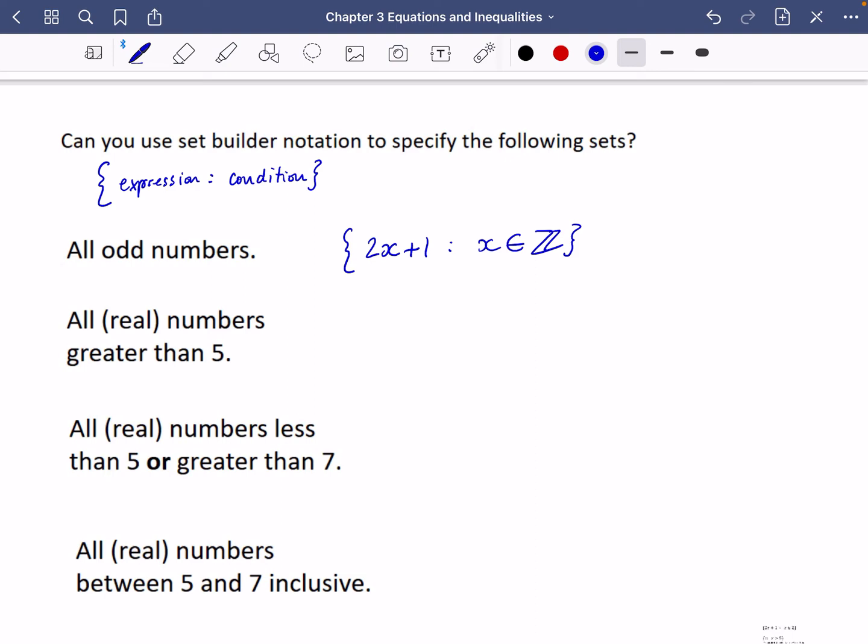Because if you take an integer, you times it by two and then you add one, you would get an odd number. This one wants us to do all the numbers greater than five. So first of all, I'm going to specify that I'm just going to say my number I'm talking about here is x, and I'm going to just say that x is going to be greater than five.